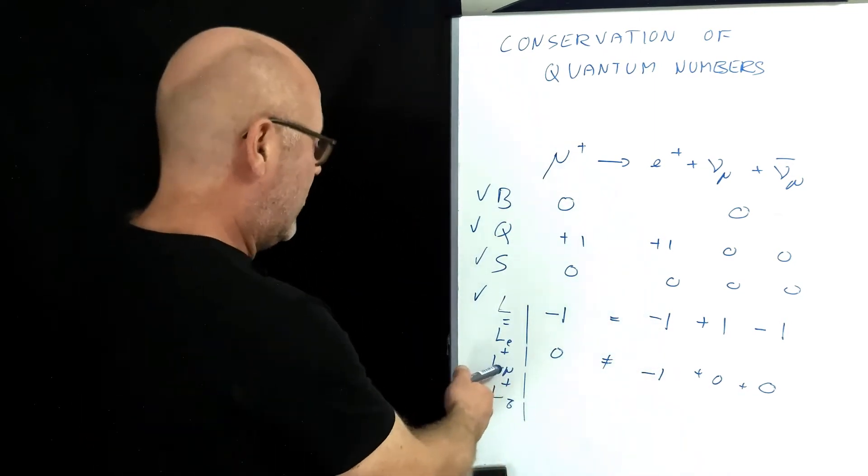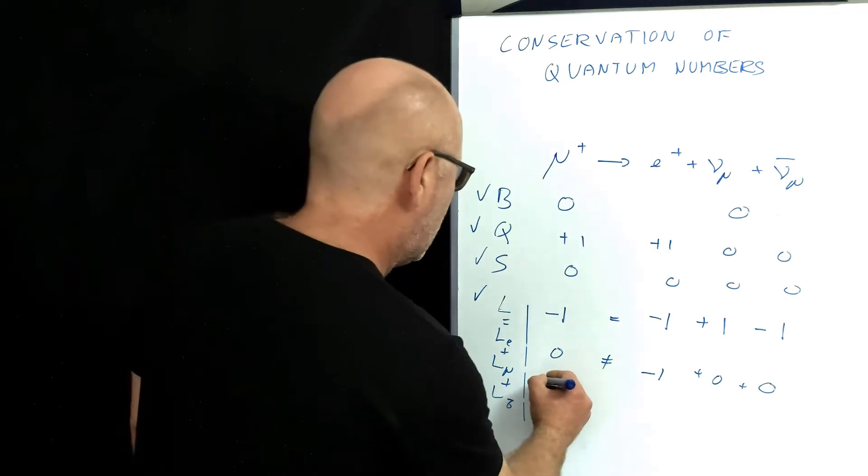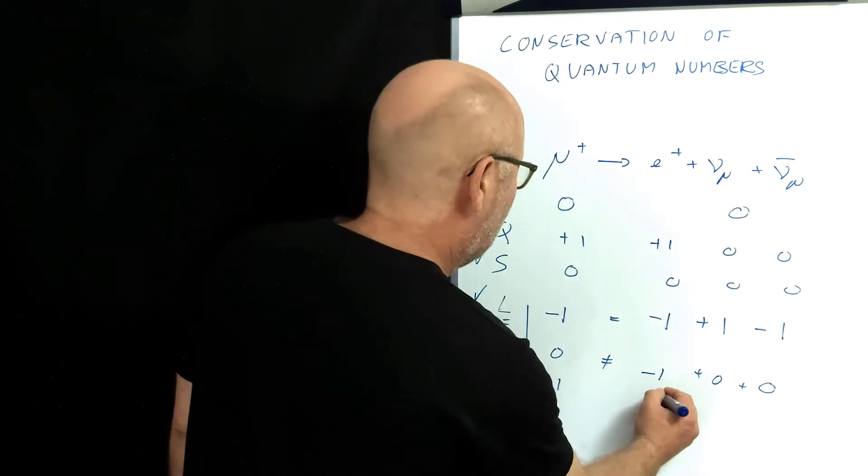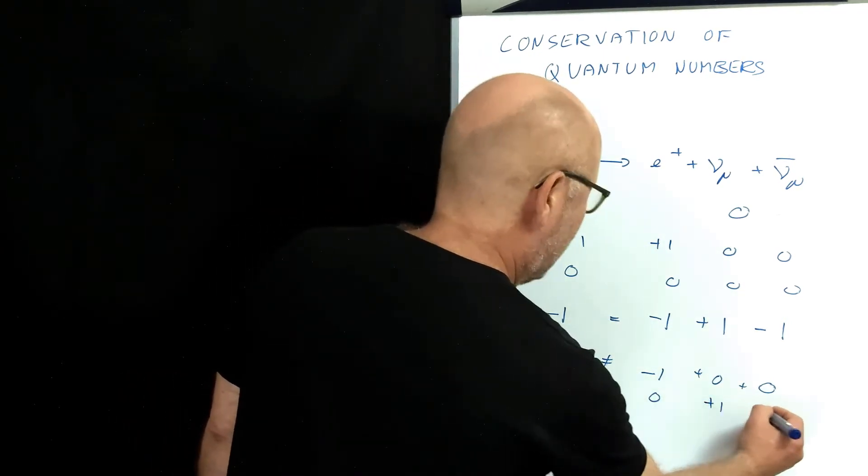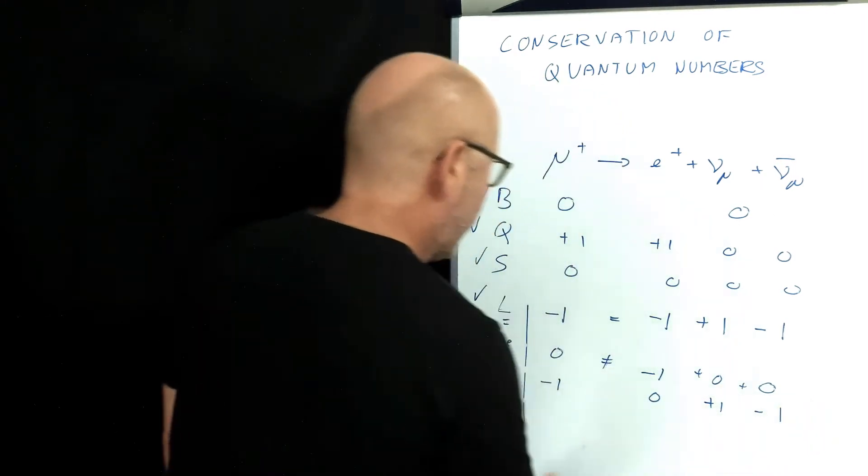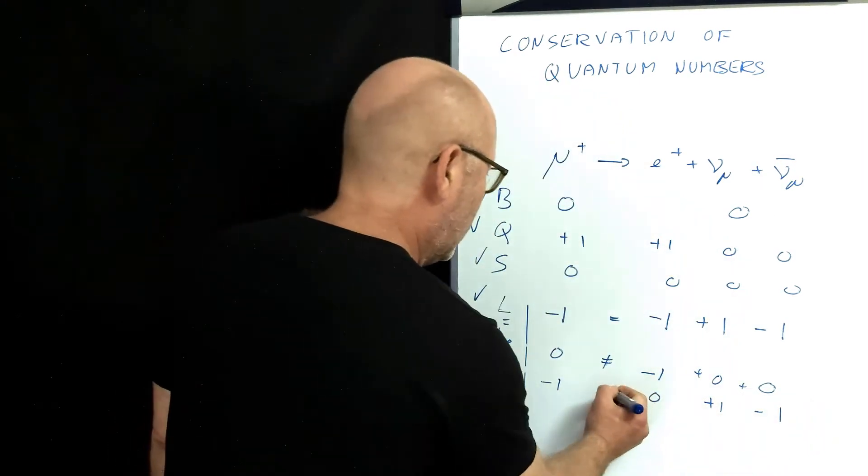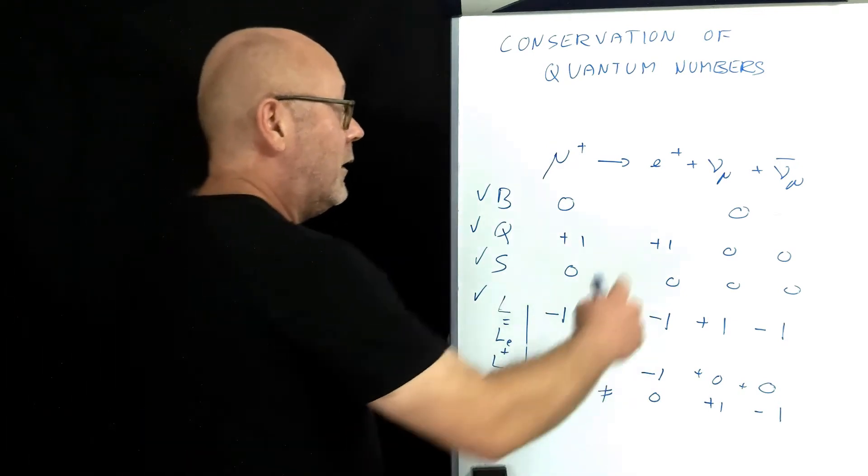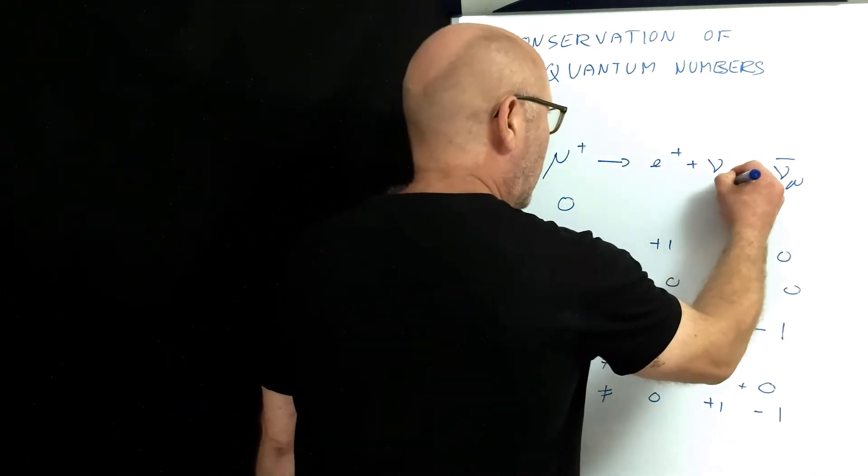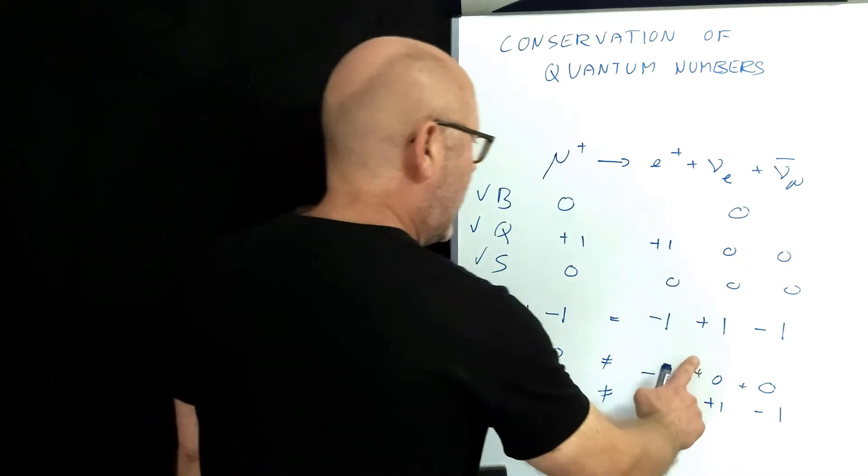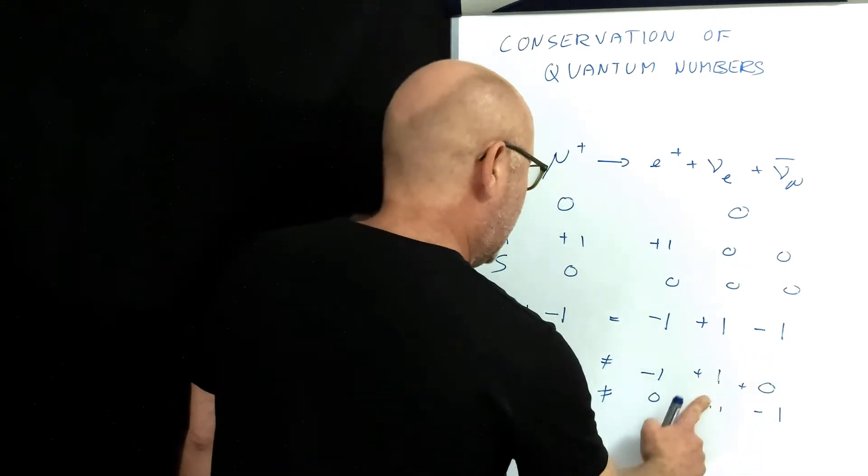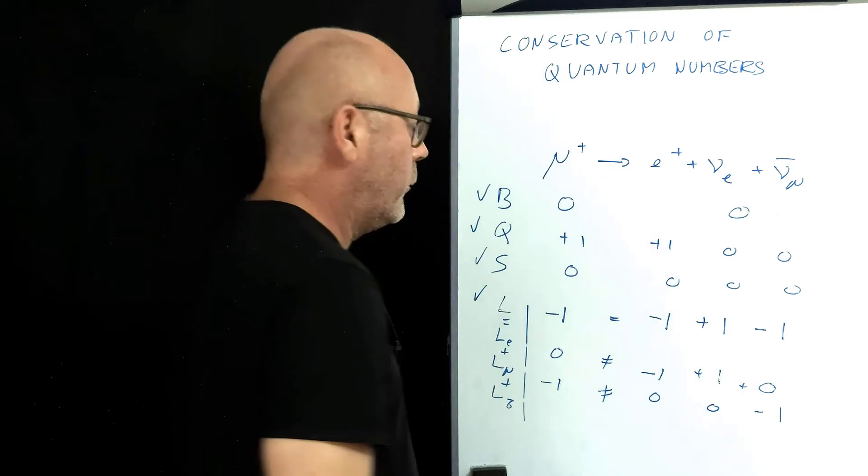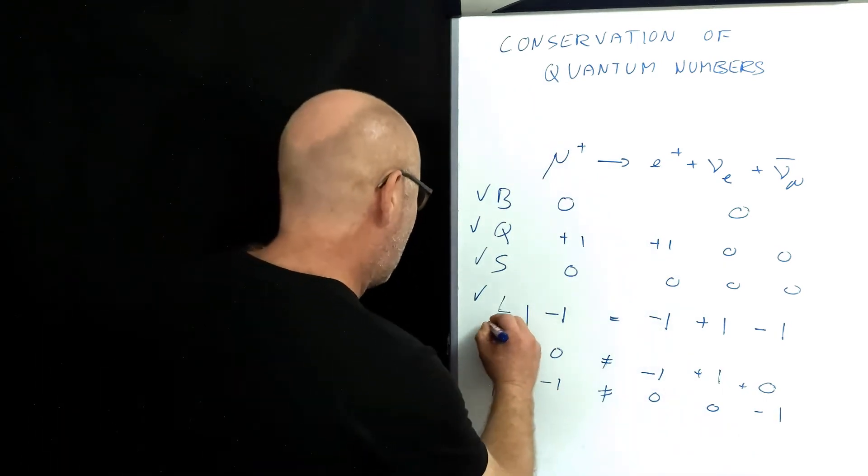If I do the muonic lepton number, that would be minus one, that would be zero, that would be plus one, that would be minus one. Again, you have minus one equals zero, so it's not conserved. In order for this to be conserved, that needs to be an electronic neutrino. Like this, you would have plus one here, and here you'd have zero. And there you could check.